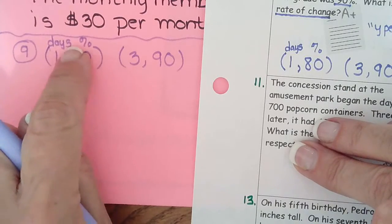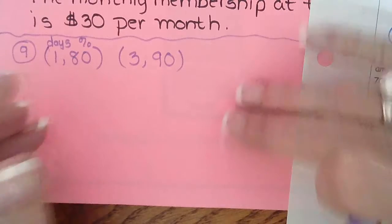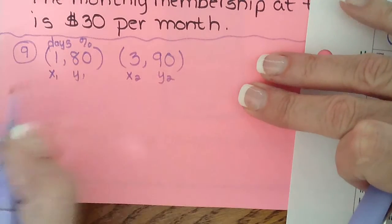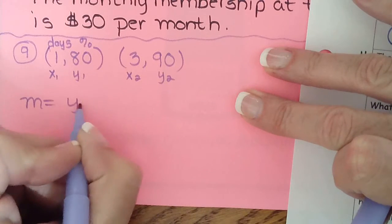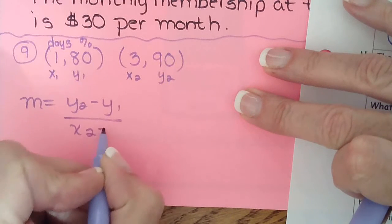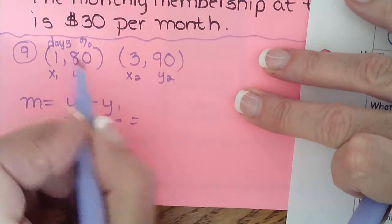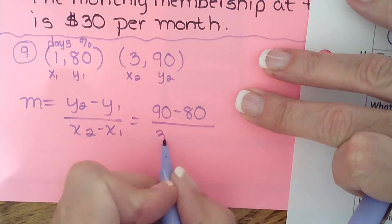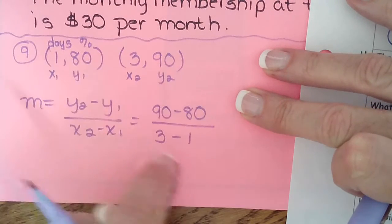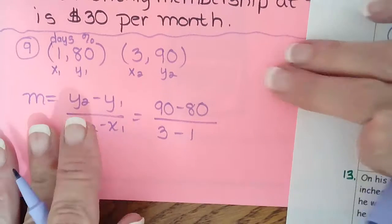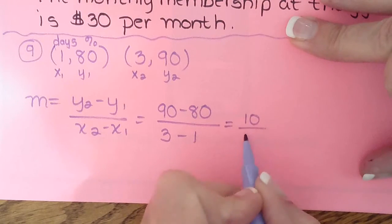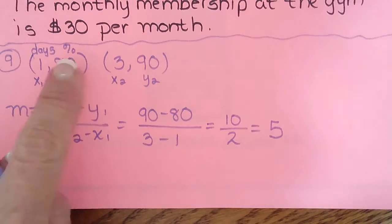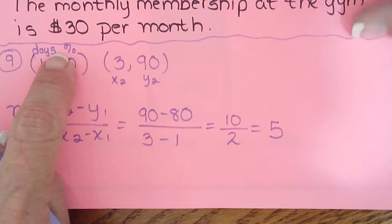This is our x1, y1, x2, y2. We find slope: second y minus first y over second x minus first x. So 90 minus 80 over 3 minus 1 — remember the x values always go in the denominator. That gives us 10 over 2, which simplifies to 5. Then we put our label on: percent per day.